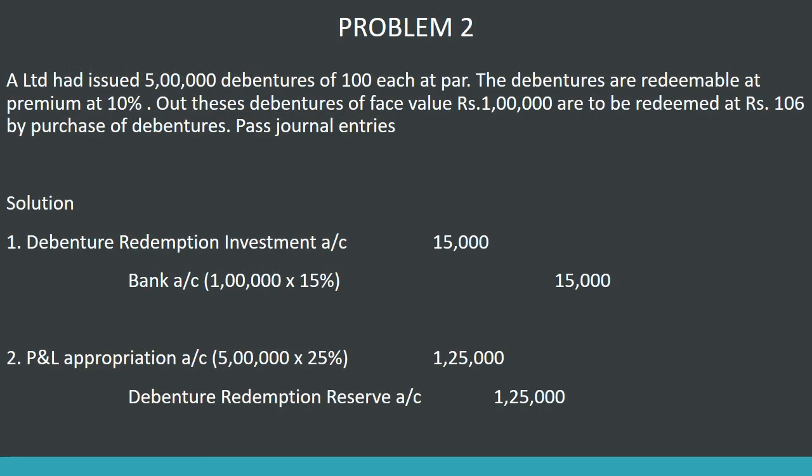A Limited had issued 5 lakhs debentures of Rs. 100 each at par. The debentures are redeemable at a premium of 10 percentage. Out of these debentures, a face value of Rs. 1 lakh is to be redeemed at Rs. 106 by purchase of debentures. Pass the journal entry. We have 5 lakhs debentures of Rs. 100 each, premium at 10 percentage. We are ready for 1 lakh debentures by purchase at Rs. 106.